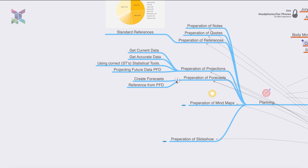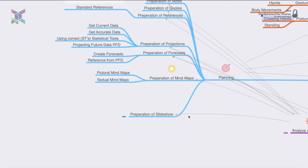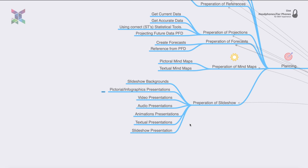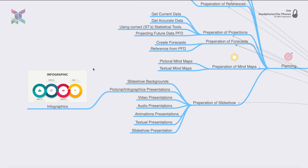Preparation of forecast requires connecting current data with future data using forecasting tools. Preparation of mind maps includes pictorial and textual mind maps, generally used for corporate presentations. For preparation of slideshows, the background should reflect the theme of the presentation. You can also use pictorial infographics, videos, audios, animation, textual presentation, and slideshow presentations.